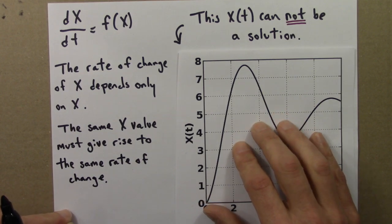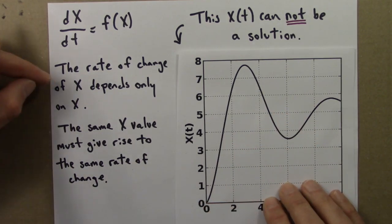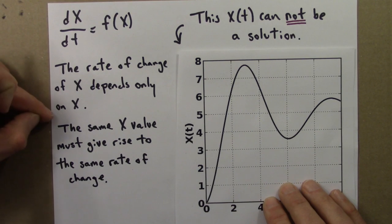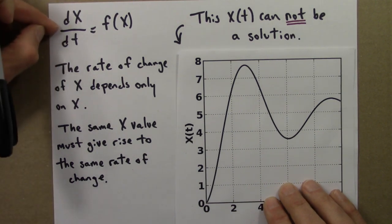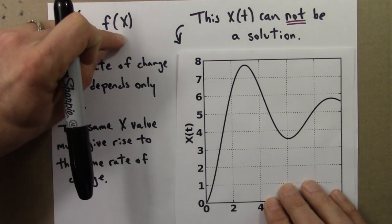This is an important point, so let me write this out. Again, the rate of change of x depends only on x. That's what this equation says. The rate of change of x is only a function of x.